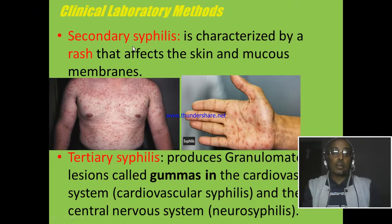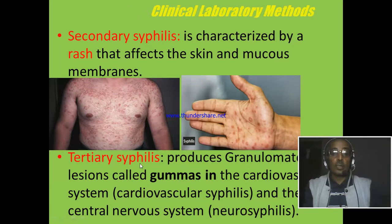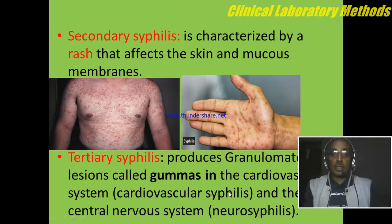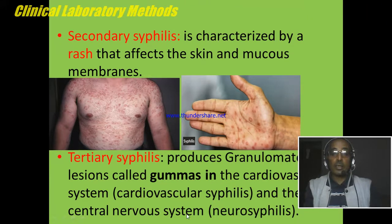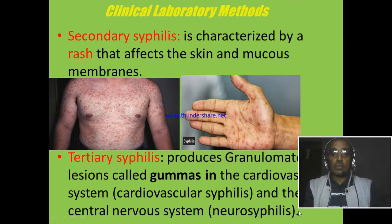Untreated secondary syphilis can also develop into tertiary syphilis. During this time, the bacteria further disseminate into deep organs like the heart and central nervous system, causing cardiovascular syphilis and neurosyphilis respectively.